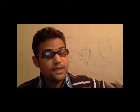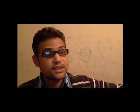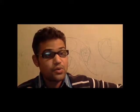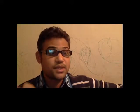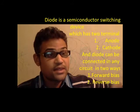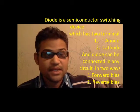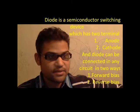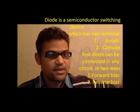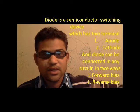Now, how can we convert an AC signal into a DC signal? To know the answer, we need to know something about the diode. A diode is a semiconductor switching device which has two terminals: anode and cathode.